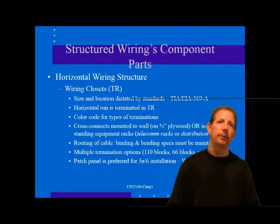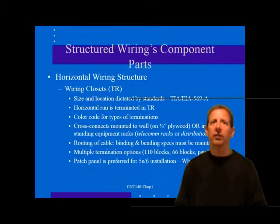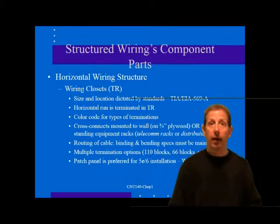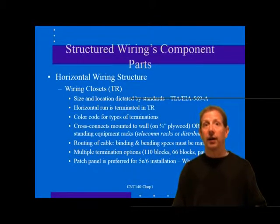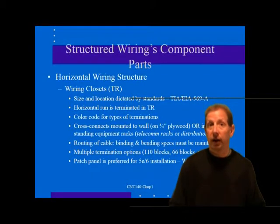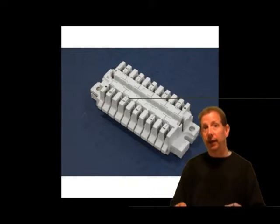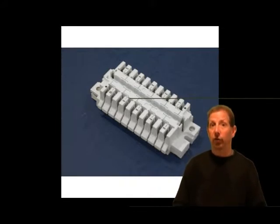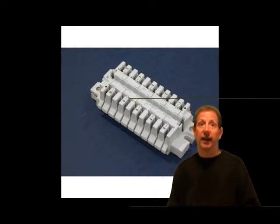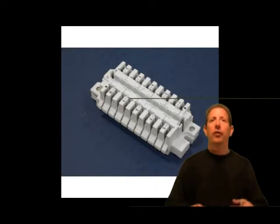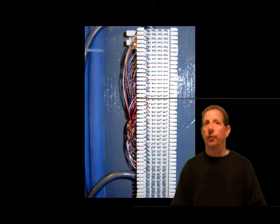Cat 5e is now the minimum specification. Insulation displacement terminations (IDC) use a split metal contact upon which the insulated wire is forced, cutting through the insulation and making metal-to-metal contact with the copper wire. Several types of insulation displacement connectors exist, including modular snap-together IDC jacks, modular 110-type IDC jacks, and older 66-type IDC jack plates. Except for the 66-type, jacks are commonly available in models certified to Cat 5e performance standards.